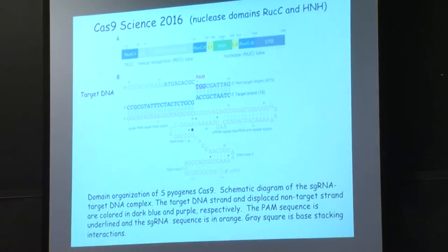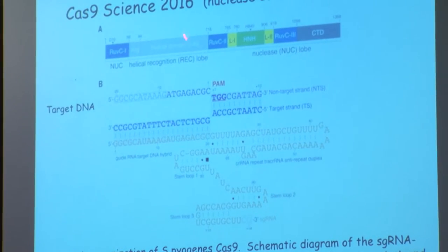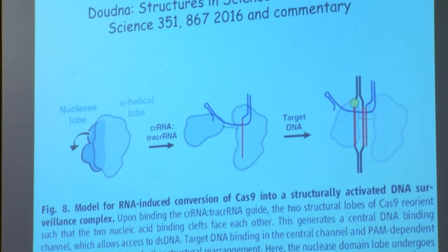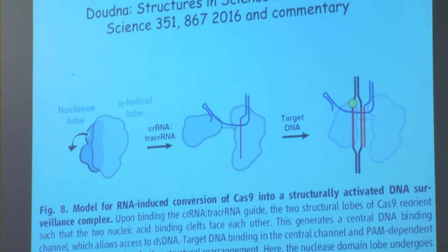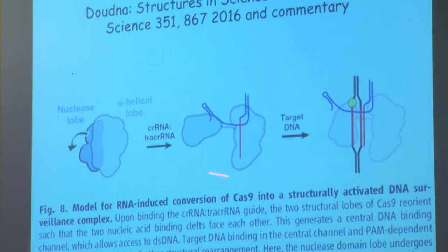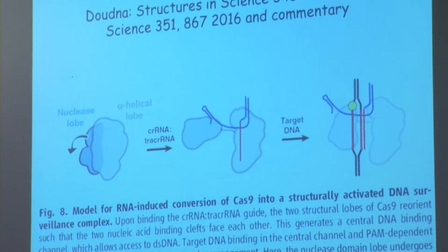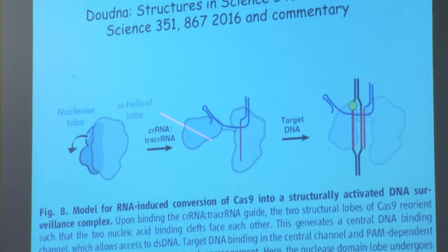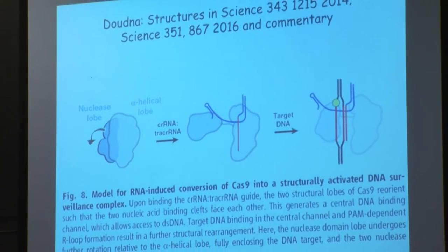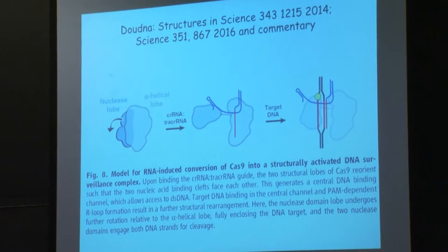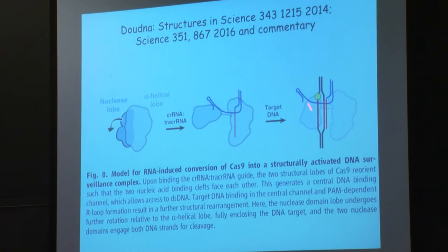There are two domains: the nuclease domain, which are not contiguous, and a helical domain. Doudna used cryo-EM at about 30 Angstroms resolution to show that when you start with Cas9 and add the two pieces of RNA, you get a change in conformation — they could see that in the cryo-EM because it was huge. And then when you add the targeting DNA, the nuclease domains and the overall conformation of the protein changes tremendously. Just recently the atomic resolution structure came out showing exactly how this complex assembles.